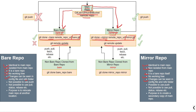The next point is that it is not possible to use the push option in a bare repository, whereas in the case of a mirror repository, it is possible to use the push option. To understand this, let's say we have created a non-bare repository from this bare repository using this command, and similarly, we have created a non-bare repository from this mirror repository using this command.